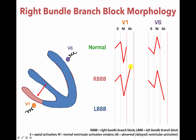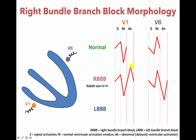Once the left ventricle is fully depolarized, the right ventricle is still catching up, proceeding slowly through cell-to-cell conduction. You get a net electrical current towards V1 and away from V6, producing a positive deflection in V1 that is delayed due to slower conduction — leading to widening of the QRS complex. The morphology you see is an R wave, an S wave, and a second R wave, which we term R prime. In V6, you see a Q wave, an R wave, and an S wave. The eye is drawn to this R, S, R prime pattern, and the mnemonic often used is 'rabbit ears' in V1.